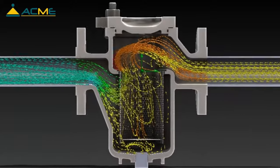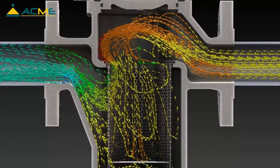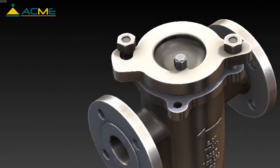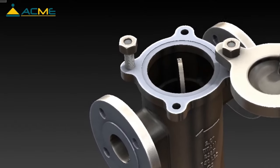A basket strainer is a device that uses a mesh screen to filter out foreign particles in a horizontal pipeline. These particles are then removed from the strainer and will not make their way into downstream equipment like pumps, valves, and traps.